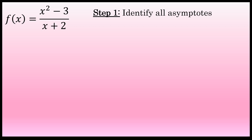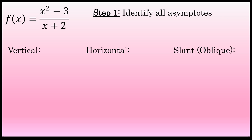There are three kinds of asymptotes that a rational function might have: vertical, horizontal, and slant asymptotes. Slant asymptotes are sometimes known as oblique asymptotes. Vertical asymptotes occur when the denominator is zero — specifically at x values where the denominator is zero but not the numerator.